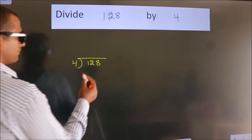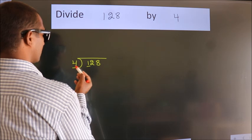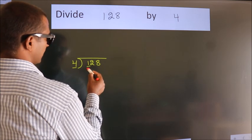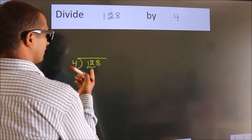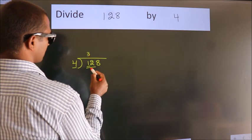Next, here we have 1, here 4. 1 is smaller than 4, so we should take 2 numbers, 12. When do we get 12? In the 4 table. 4 threes is 12.